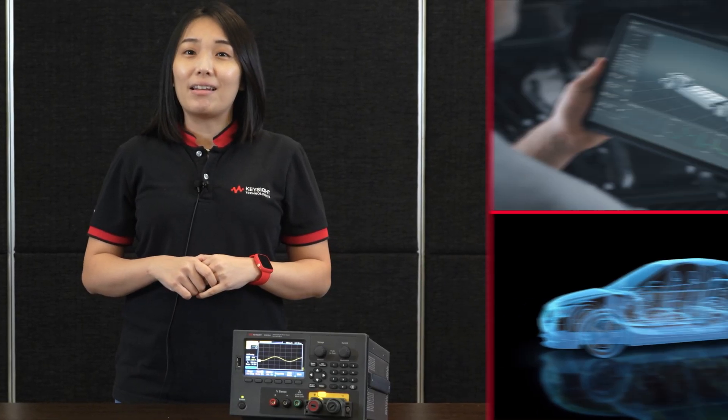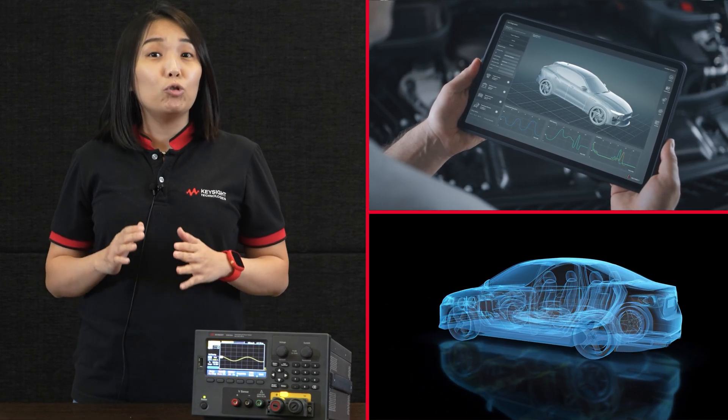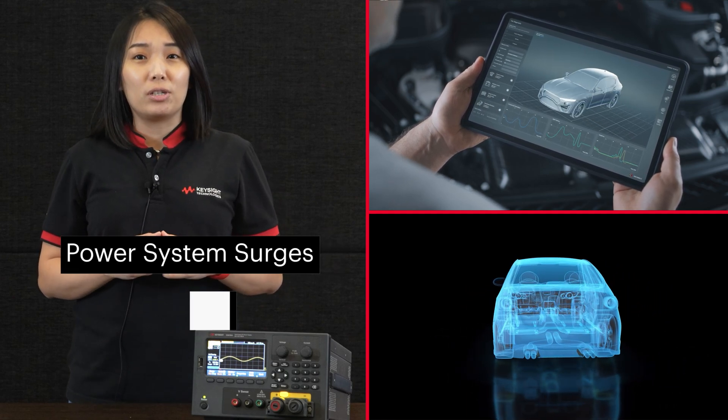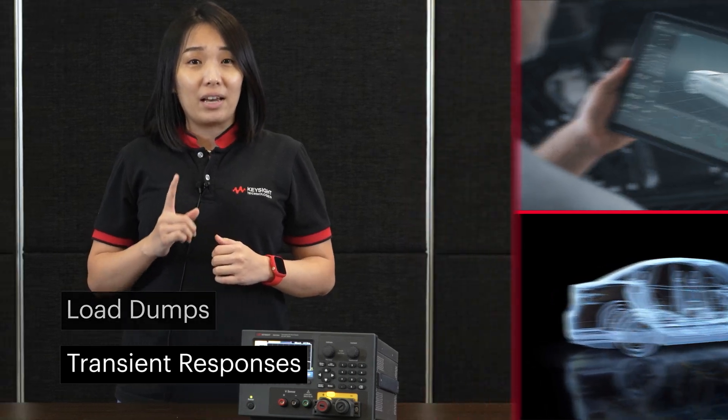Let's look at how to generate a power transient for electronic control units, ECUs testing. ECUs and other automotive electronic devices must be immune to harsh operations like power system surges, load dumps and other transient responses. Thus, these devices need to be thoroughly validated to ensure proper and reliable operation.